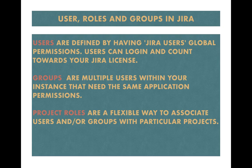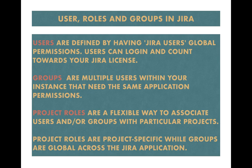The third thing is project roles. A project role is a flexible way to associate users or groups with particular projects. Project roles are project-specific while groups are global across the Jira application. For example, if you want to limit access for users within a specific project, project roles are the preferred way to do that. But if a group of people need global access across multiple projects, you group them and provide permissions to that group.